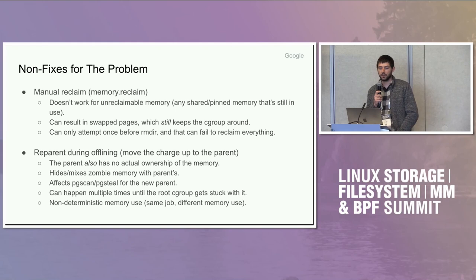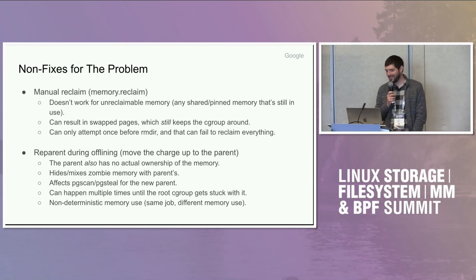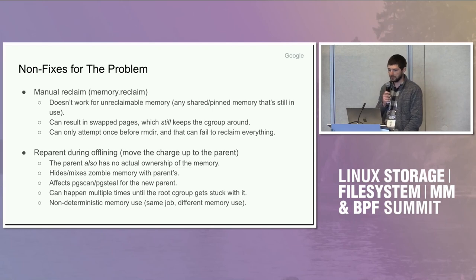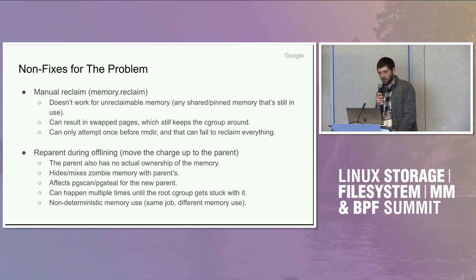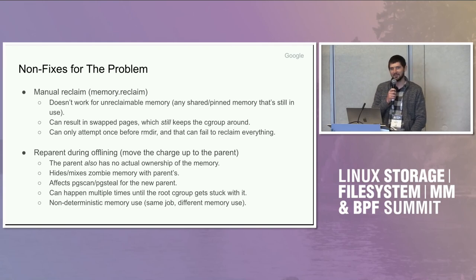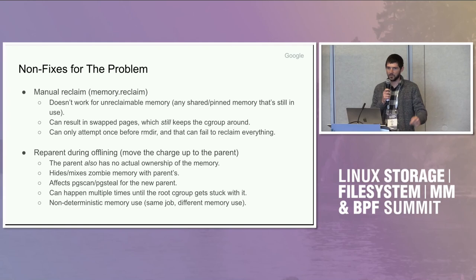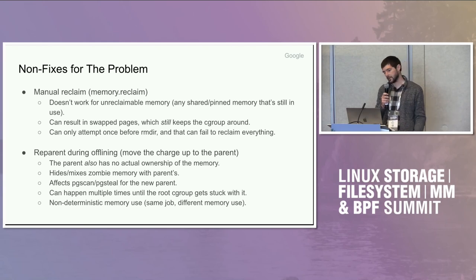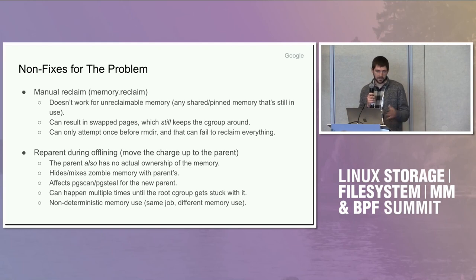First is manual reclaim — proactive reclaim of the cgroup that's about to be offlined. Well, that doesn't really work if the memory's not reclaimable. So that cgroup will stay around until that memory does become reclaimable. If you try to reclaim from the cgroup before it's offline and it results in the pages being swapped out, that makes it worse, because that cgroup will stay around until the swap gets swapped back in, and who knows when that's going to happen. Also, you can only attempt to do that once before you offline the cgroup and it can fail, so it might not capture everything. So that's not a great solution.